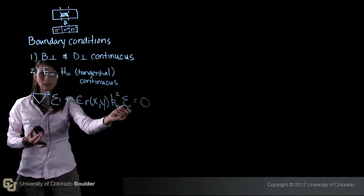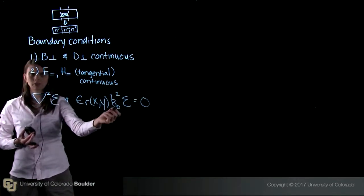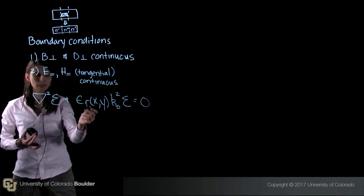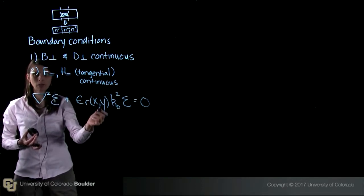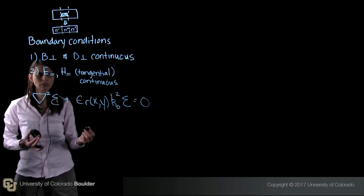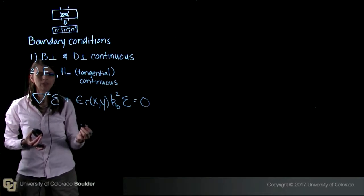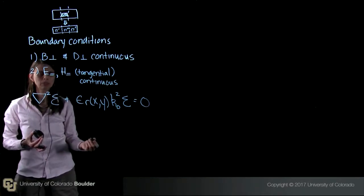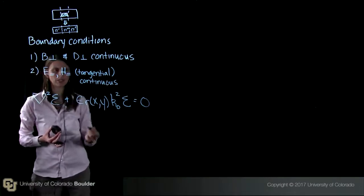This e is the electric field. k-naught is the free space wave number. And epsilon r of x and y represents the spatially varying permittivity. It's allowed to vary in x and y for our problem, but it does not vary in z.